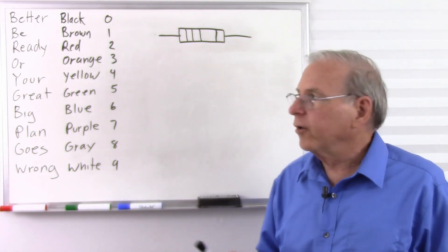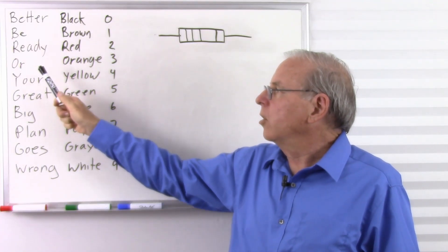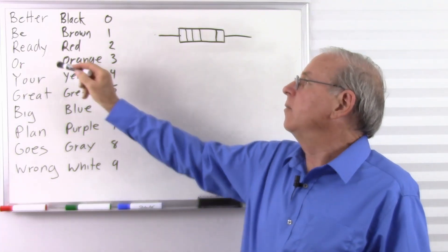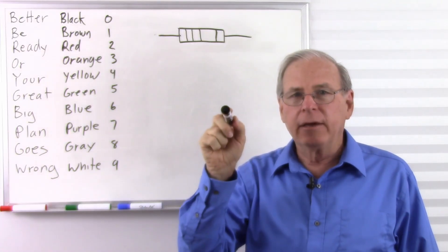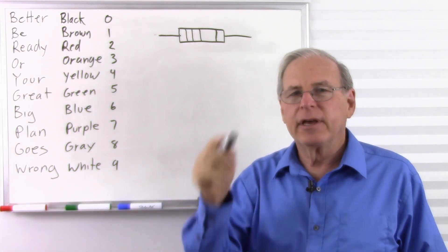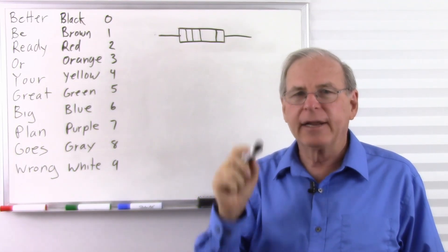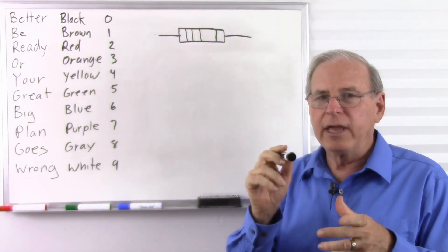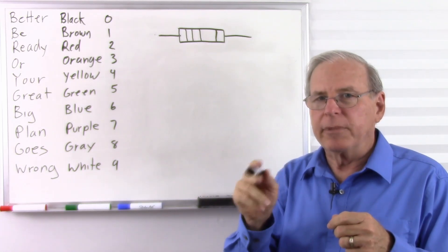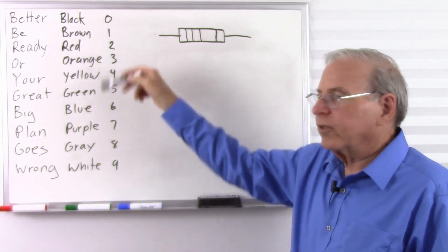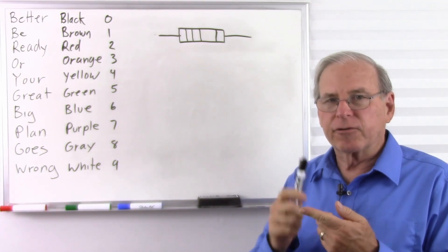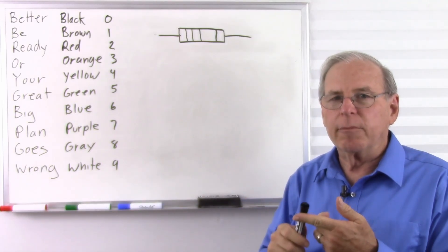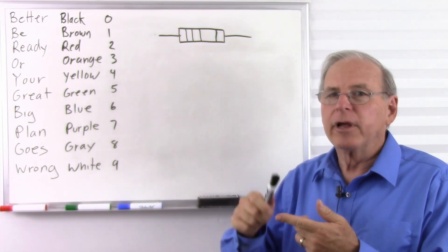Just as a reminder: remember Better Be Ready Or Your Great Big Plan Goes Wrong, and start counting with B. Be Ready Or Your Great — that's five. Be Ready Or Your Great Big Plan — that's seven. Be Ready Or Your — that's four. Gray: Be Ready Or Your Great Big Plan Goes — that's eight. If there are three color bands, it's number, number, number-of-zeros. If it's four colors, it's number, number, number, number-of-zeros.